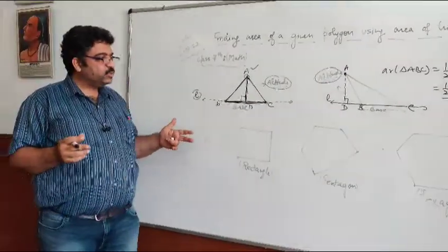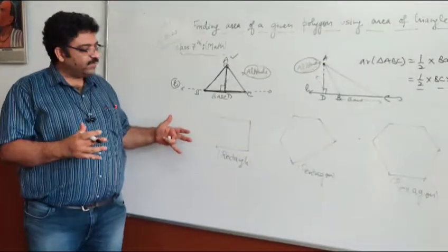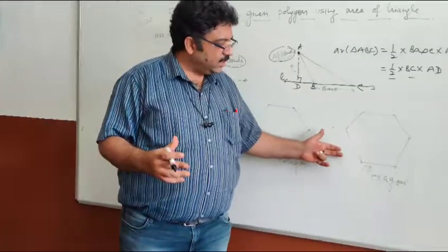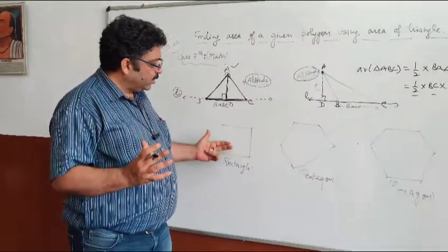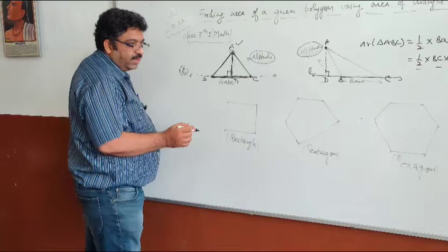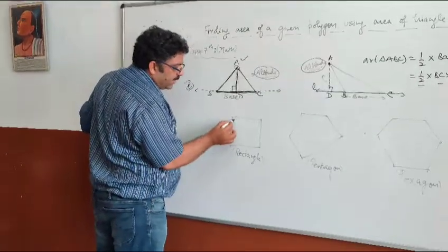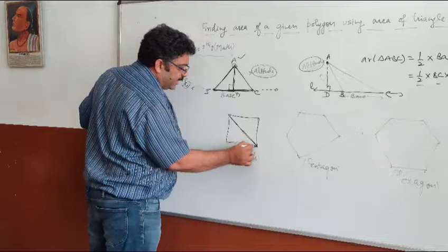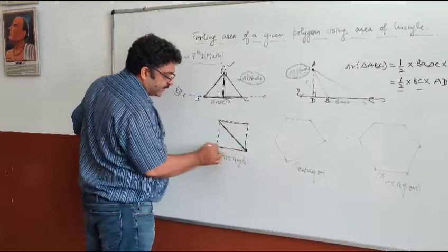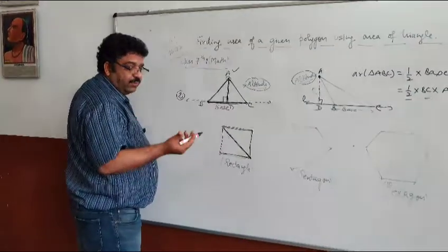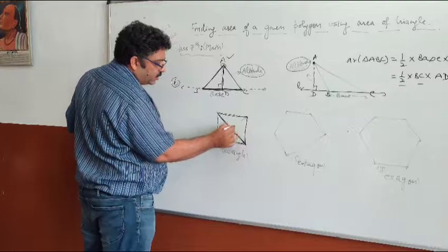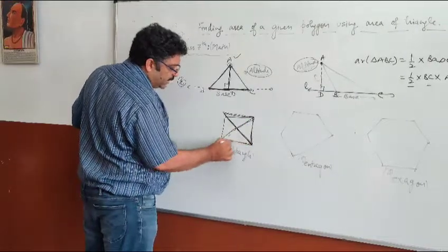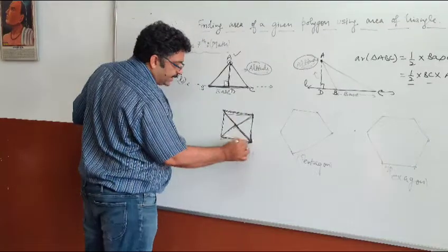Our next objective is to find out the area of different two-dimensional polygons. I have drawn here a rectangle, pentagon, and hexagon. Using the area of triangle, we will find the area of these two-dimensional shapes. For the rectangle, one method is to join the diagonals and find the area of the two triangles formed, then add them. Another method is to draw both diagonals and find the area of the four triangles, then sum them up to find the area of the rectangle.